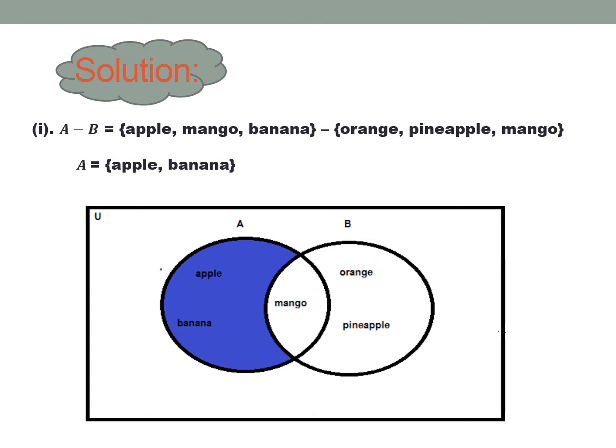So we have here the Venn diagram. Set A is the shaded part, so A minus B is shaded.